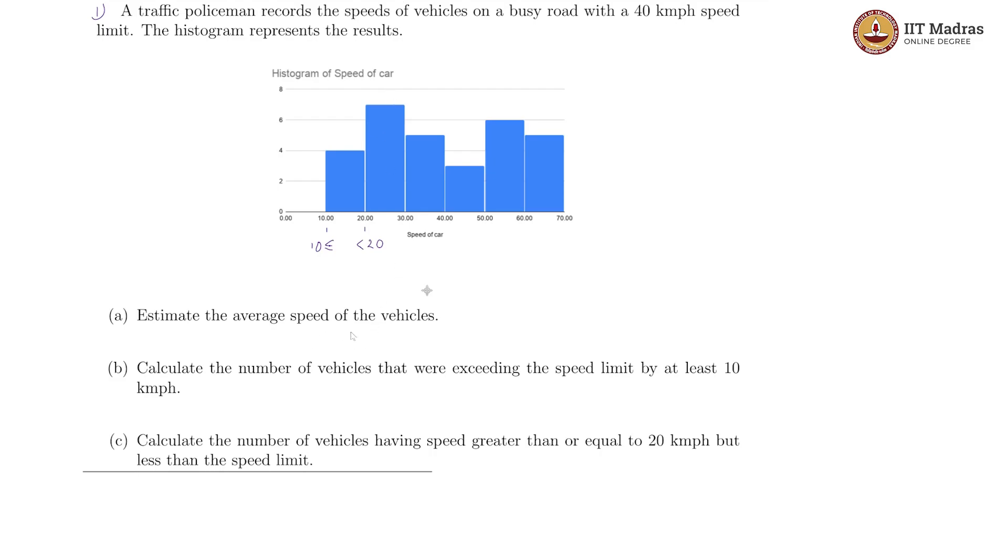So here, let us estimate the average speed of the vehicles. For this, we are going to use a midpoint of each class. For this class, it is going to be 15. For this one is going to be 25. For this one it is going to be 35, 45. This is 55 and this is 65.